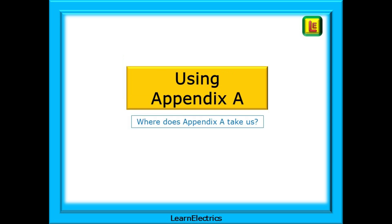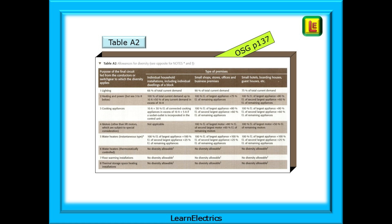Before we look at Appendix H, let's start with Appendix A and see where this takes us. Turn to page 137 of the on-site guide where you will find Table A2. This page shows the different types of circuits and usages and suggests how to calculate diversity for each individual circuit of the installation. Even after diversity, this often has a tendency to still return a high maximum demand figure.